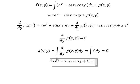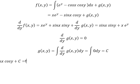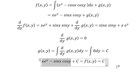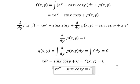We know that f(x,y) equals C. Simplifying, the final answer is xe^y minus sinx cosy equals C. This is the end. Thank you for watching.